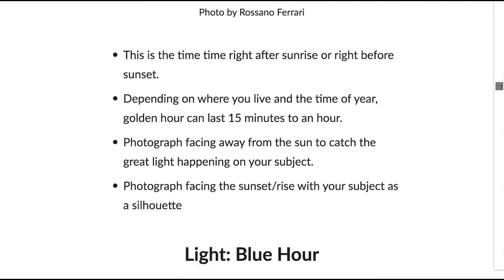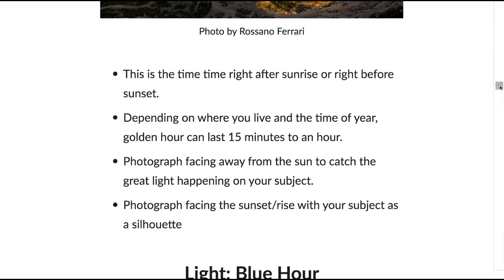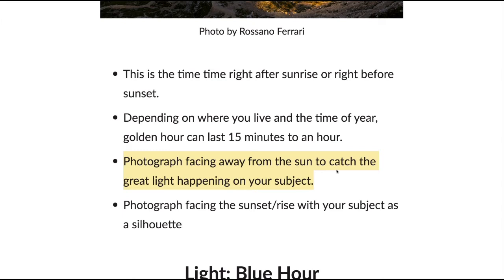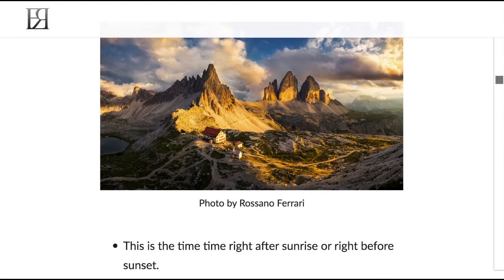The golden hour is the time right after sunrise or right before sunset. Depending on where you live and the time of year, golden hour can last 15 minutes to an hour — in extreme northern locations like Alaska it can last much longer. Paying attention to the light around you before sunset gives you a better idea of when to get to a location. If you photograph facing away from the sun you can catch great light hitting your subject.